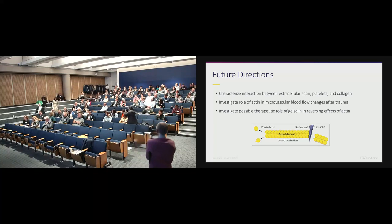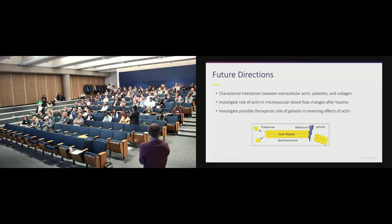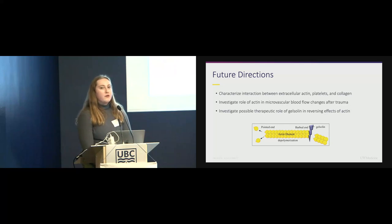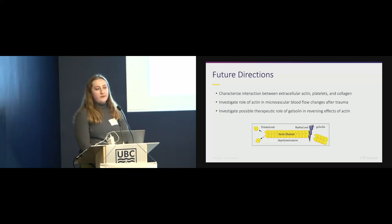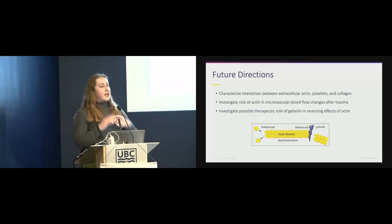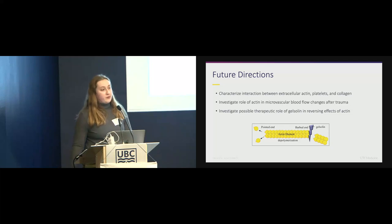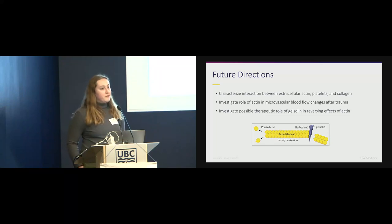Audience question: Were you planning to use any other assays or ways to look at this interaction rather than aggregation? Sarah's response: We're thinking about maybe TEG or ROTEM, and then maybe actually using some of our in vivo rat models — like putting gelsolin into the rats. So we're increasing our ways of investigating this, because right now we've only done platelet aggregometry. We use the ChronoLog 700, and it can be a little bit finicky as well. It'll be interesting to see how this pans out across different types of assays.